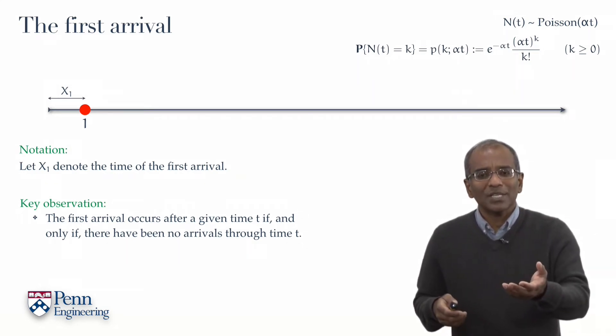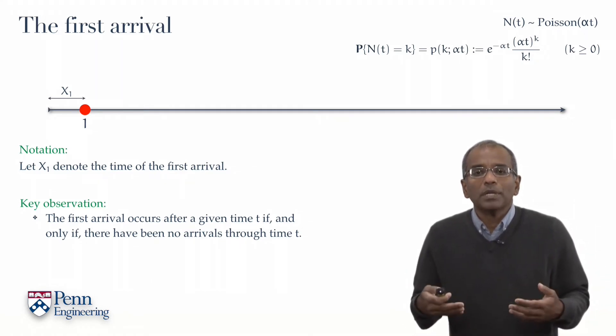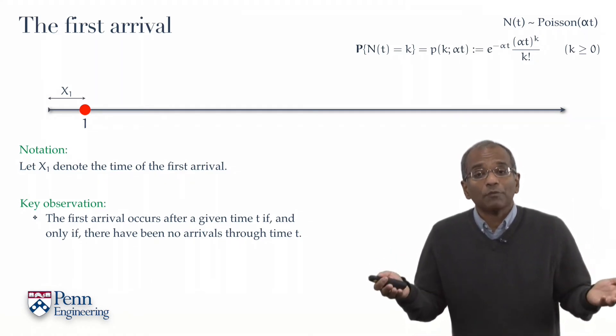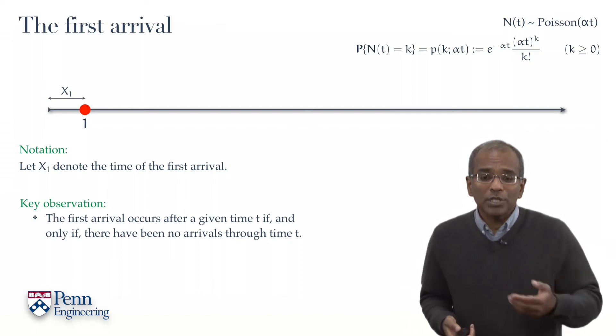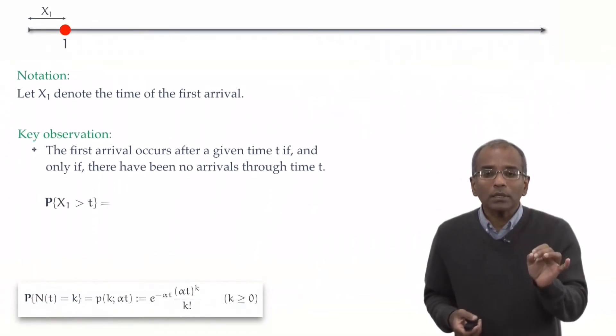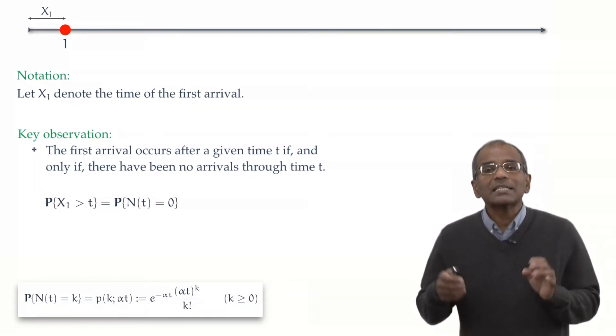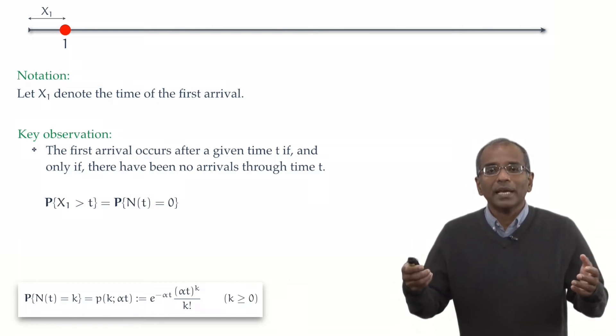And the moment we say something like this, we now have a direct path to calculating the probabilities associated with the time of first arrival. And so, directly, the probability that X₁, the time of first arrival, exceeds a given value t is exactly the probability that there are no arrivals up till t.